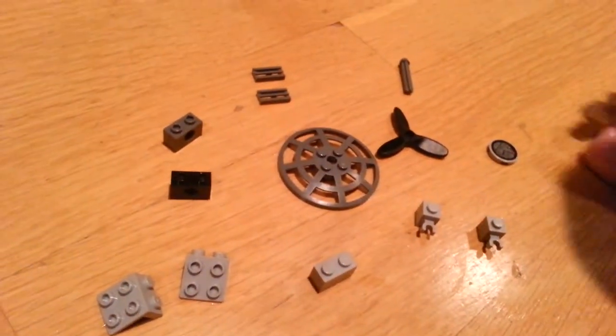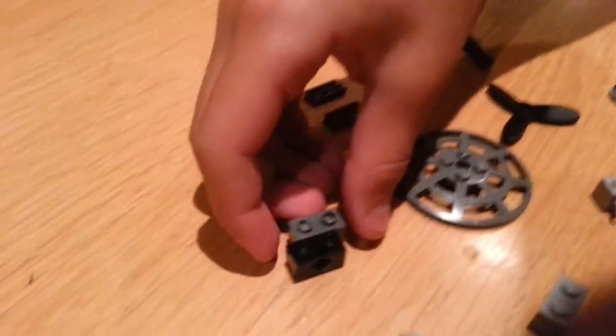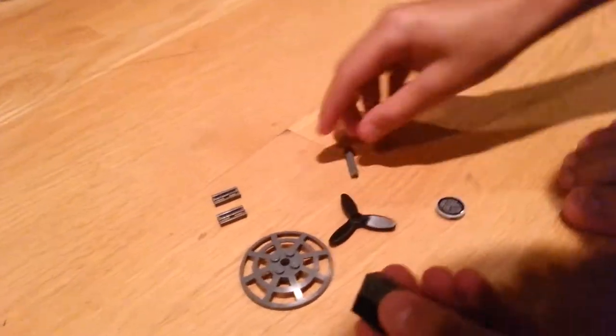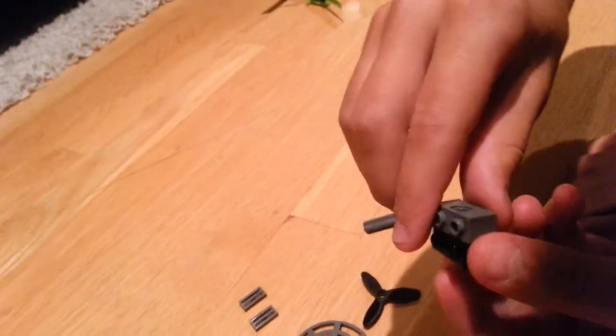We're going to start off with the engine. These are the pieces you need for the engine. So you start off with this. You put this one behind that, like that. You put this cross in the circle. So you put it together and then like that.